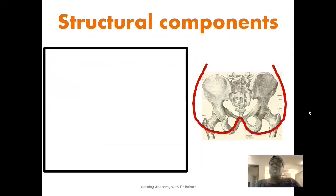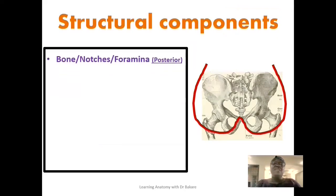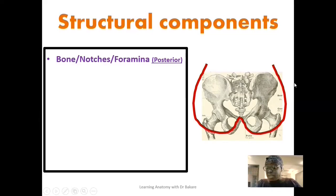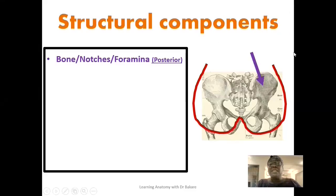Let's highlight the structural components of the gluteal region. These include bone, which forms the background onto which other structures are aligned. A number of bones contribute to the bony landmark of the gluteal region. Using this image, we have the ilium at the superior lateral region of the bony pelvis, and it is specifically the posterior surface of the ilium that contributes to the alignment of the gluteal region.